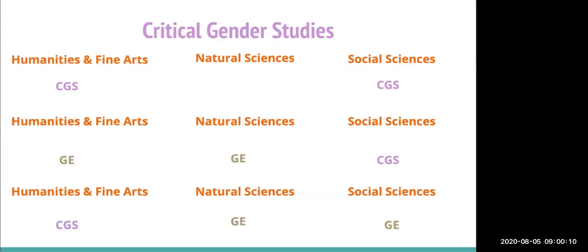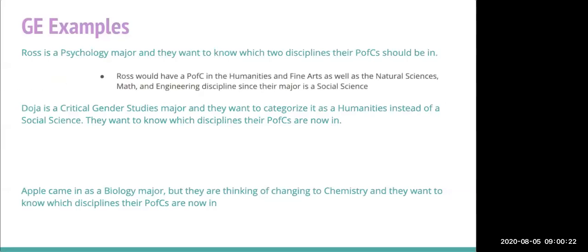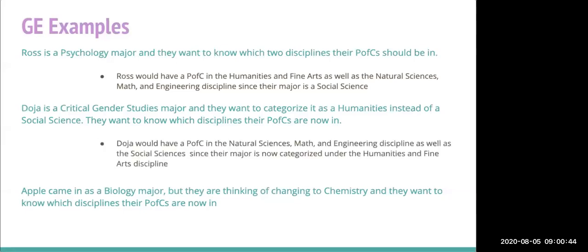Here are some examples. Ross is a psychology major who wants to know which two disciplines their PFCs should be in. Since psychology is a social science, Ross would have a PFC in humanities and fine arts and natural sciences, math, and engineering. Doja is a critical gender studies major who wants to categorize it as humanities instead of social science. Doja would then need PFCs in natural sciences, math and engineering, and social sciences.